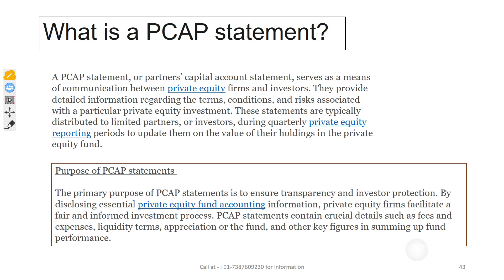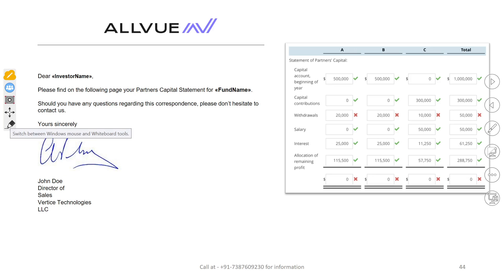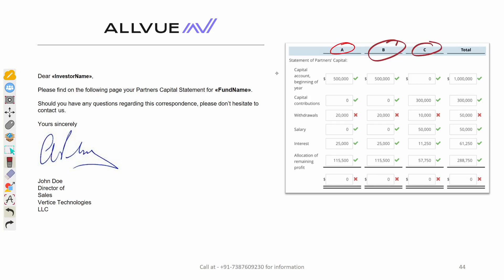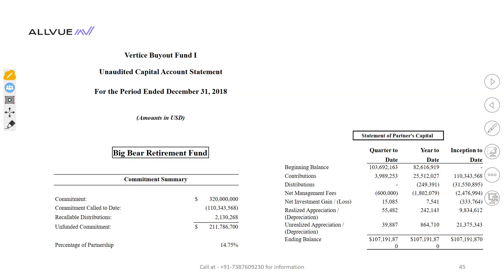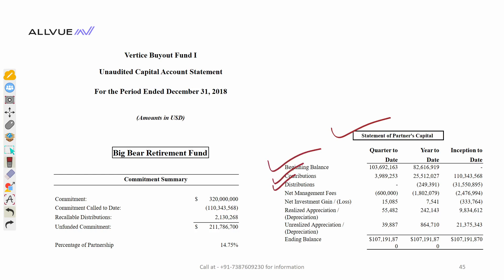Let me show you how a PCAP looks. Say there are partners A, B, and C — you can maintain the beginning capital, contributions, withdrawals, salary, interest, and allocation of remaining profit. This is a very practical view of how we prepare it. The partner's capital statement includes: beginning balance, contributions, distributions, management fees, net investment gain, realized appreciation, unrealized appreciation, and ending balance — all of that information is maintained.